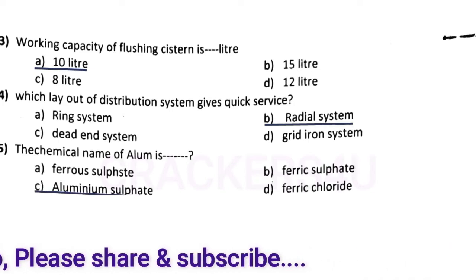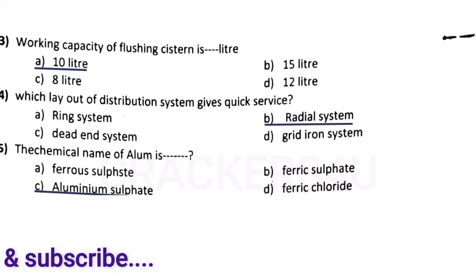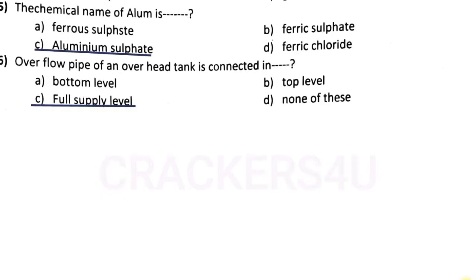Question number fourteen: the chemical name of alum is — answer option C, aluminium sulfate. Question number fifteen: overflow pipe of an overhead tank is connected in — answer option C, full supply level.